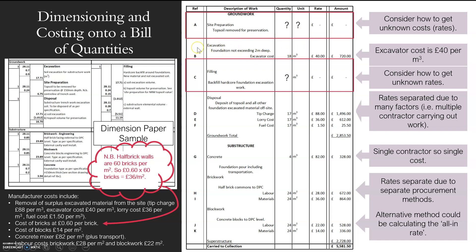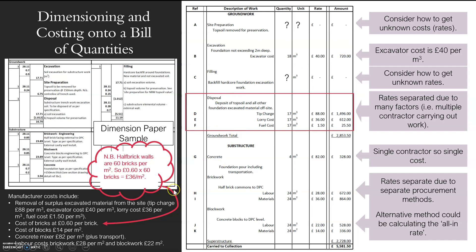I'm going to move on and give you examples that I do know. For excavation, I know my excavator cost is £40 per meter cubed — I found that out from the manufacturer. I also know I've got 18 meters cubed of soil excavation, because I've multiplied it out: 18 meters cubed times £40 gives £720. Then you move on and do the same for all the others.